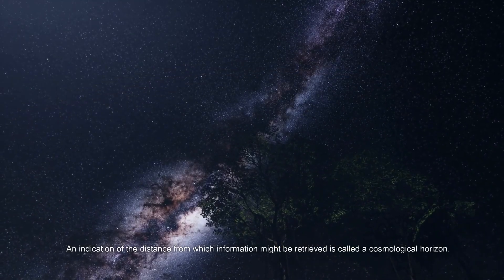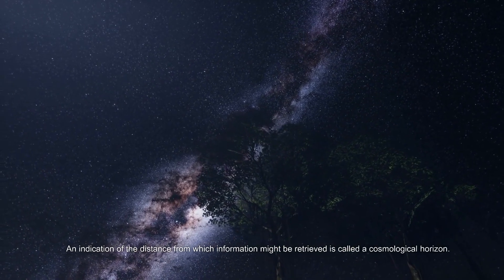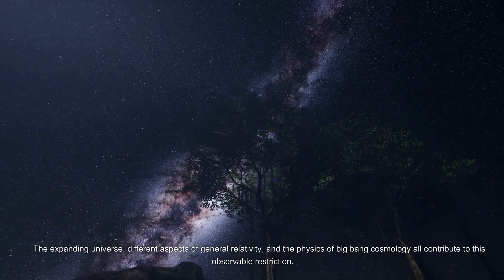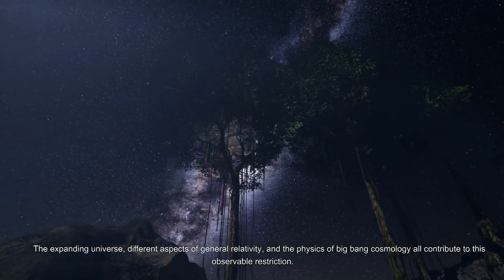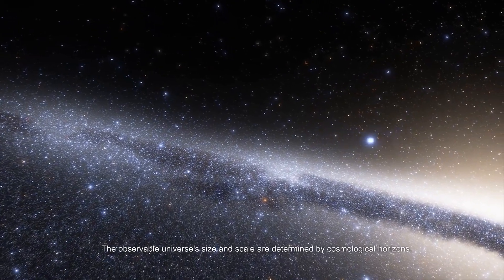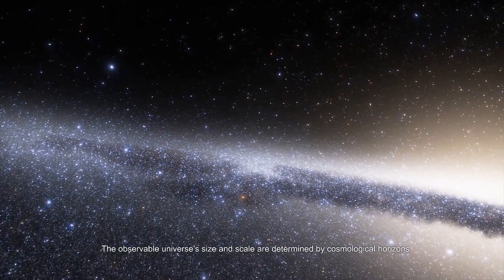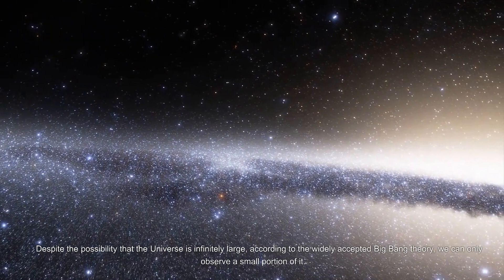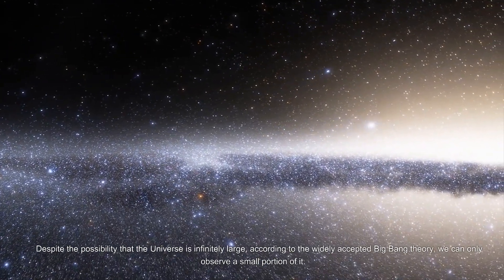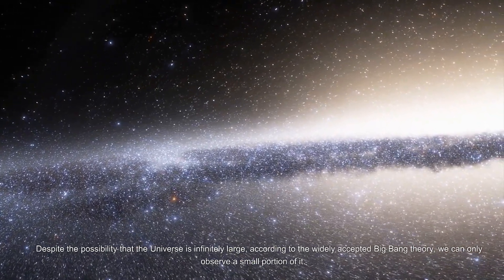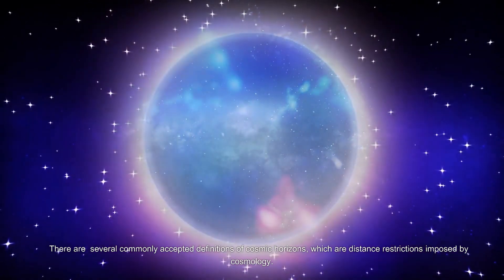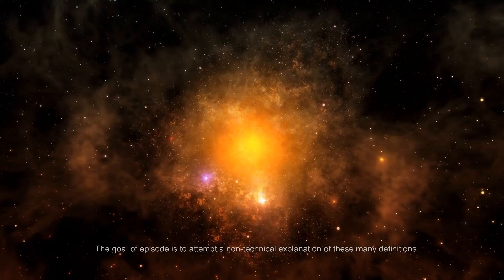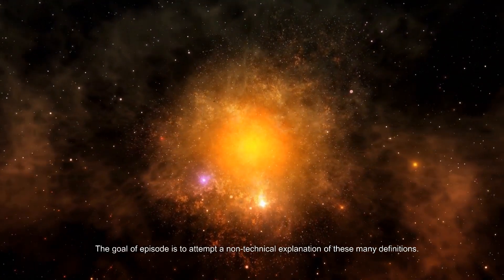An indication of the distance from which information might be retrieved is called a cosmological horizon. The expanding universe, different aspects of general relativity, and the physics of big bang cosmology all contribute to this observable restriction. The observable universe's size and scale are determined by cosmological horizons. Despite the possibility that the universe is infinitely large, we can only observe a small portion of it - the observable cosmos. The goal of this episode is to attempt a non-technical explanation of these many definitions.